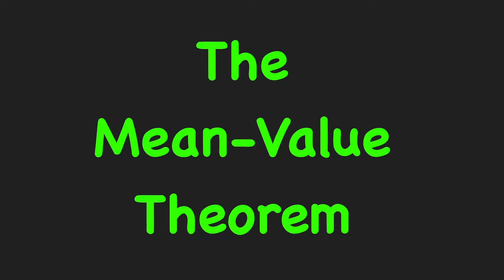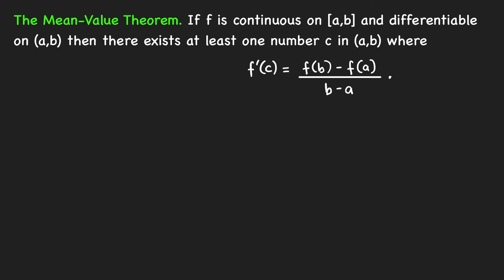In this video I'm going to talk about the Mean Value Theorem, a physical interpretation of this theorem, and the special case called Rolle's Theorem. I'm going to prove both theorems. The Mean Value Theorem states that if a function is continuous on the closed interval [a, b] and differentiable on the open interval (a, b), then there exists at least one number c in (a, b) where f'(c) equals (f(b) - f(a)) / (b - a).